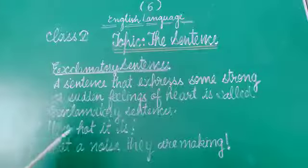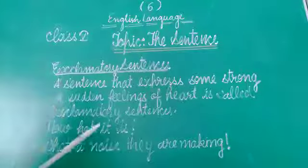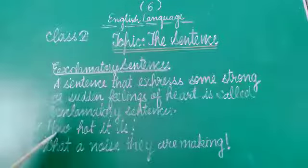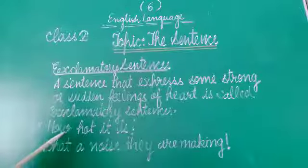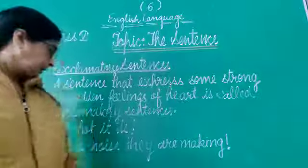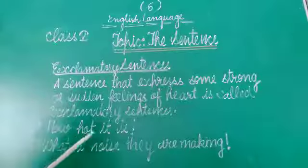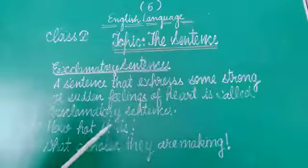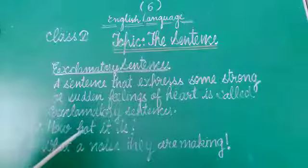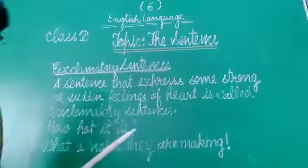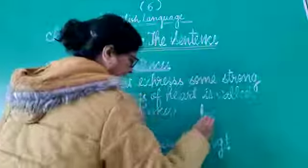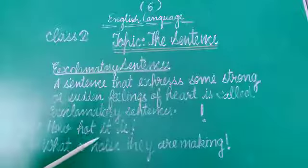Sentence number one: How hot it is? In this question, the interrogative word that is 'how.' How is showing how much the weather is hot. Means it is very much hot weather. And after completing these types of sentences, we get the sign of exclamation. This is the sign of exclamation. And after completing the sentence, we get mark of exclamation.